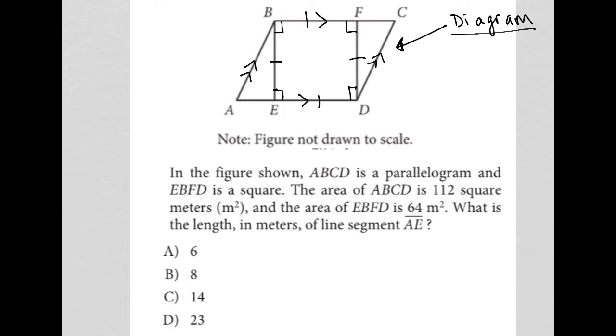The area of ABCD is 112 square meters. So the area for a parallelogram is base times height. Our base is from A to D, so I'll just call it AD. And then our height, which is BE basically. So I'll just say line segment AD times line segment BE is equal to 112 square meters.